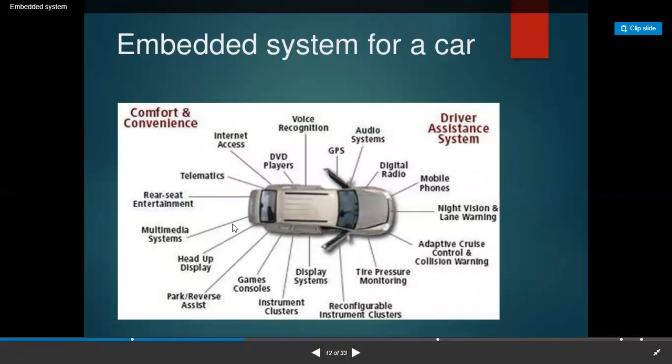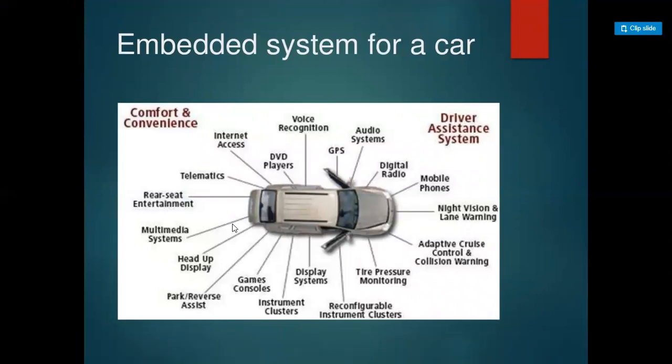Embedded systems for a car include comfort and convenience features such as internet access, DVD player, GPS, tire pressure monitoring system, mobile phone system, digital radio, night vision, adaptive control and collision warning, multimedia system, rear seat entertainment, reverse assist, games, and instrumentation cluster. All these facilities are available in a car — all based on embedded systems, with all features integrated into one device through software and hardware.